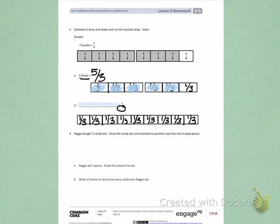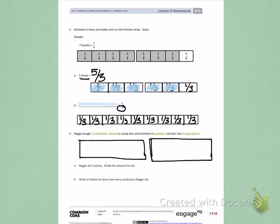Number 3. Reggie bought two candy bars. Draw the candy bars and estimate to partition each bar into 4 equal pieces. So I know I have 2 candy bars. I need to draw them and partition them into 4 equal pieces. So I need to do my best to make each of the candy bars look the same, because Reggie bought the same two candy bars. Then I need to partition them into 4 equal pieces. So I'm going to draw a line down the center and a line across. Same on the other side. A line down the center and a line across.